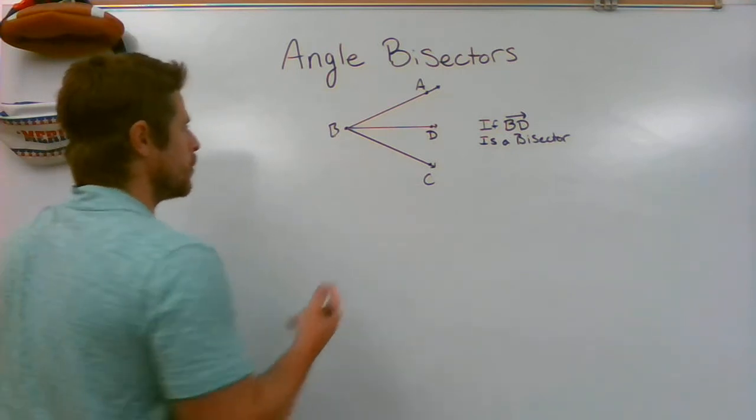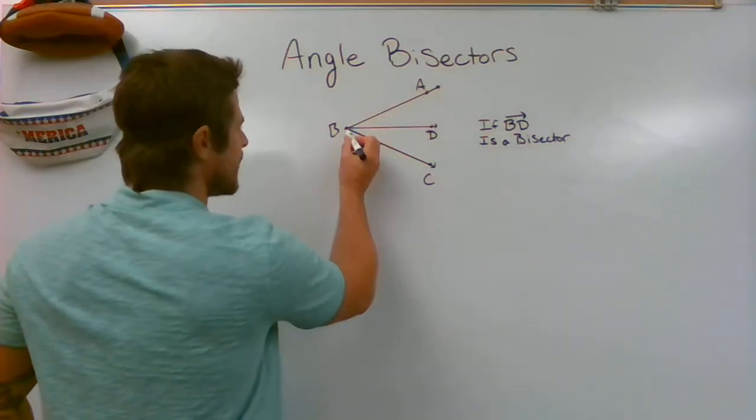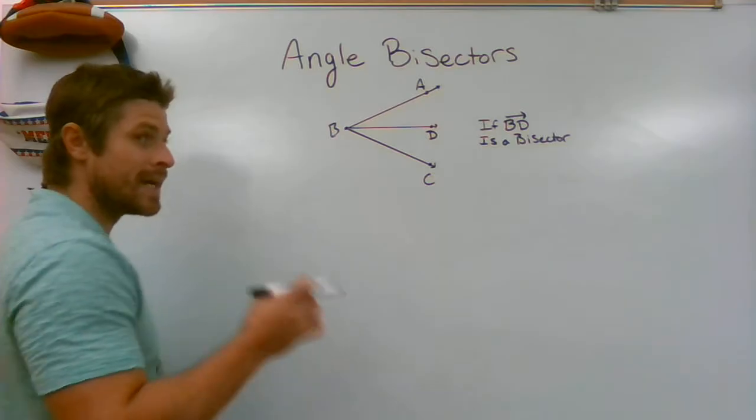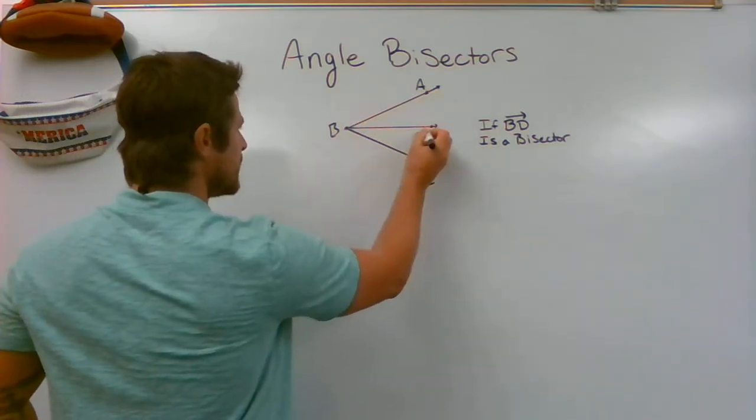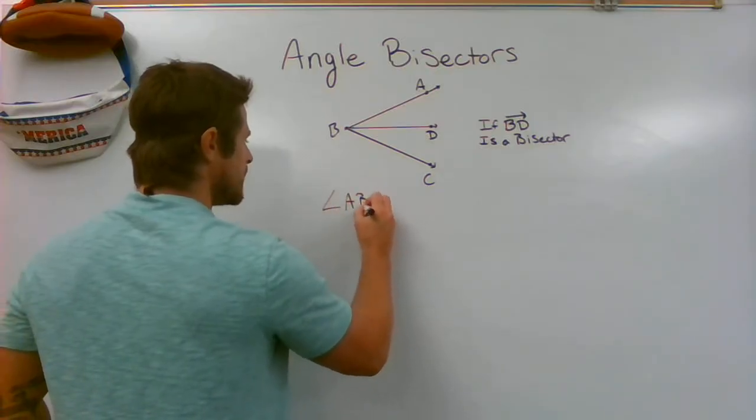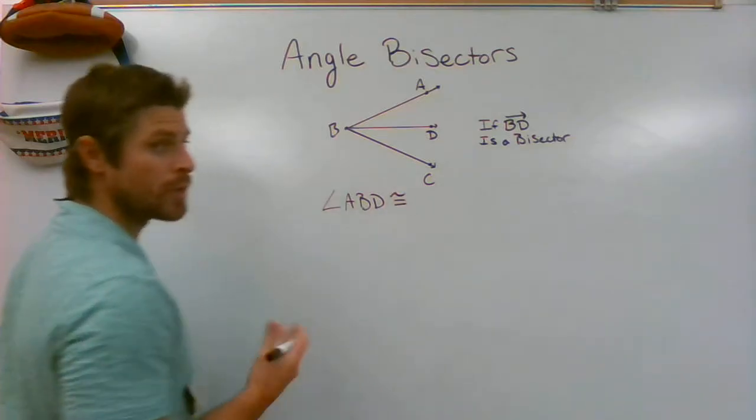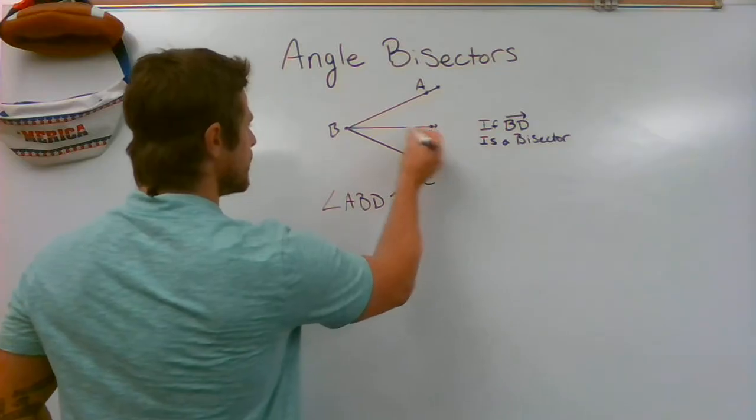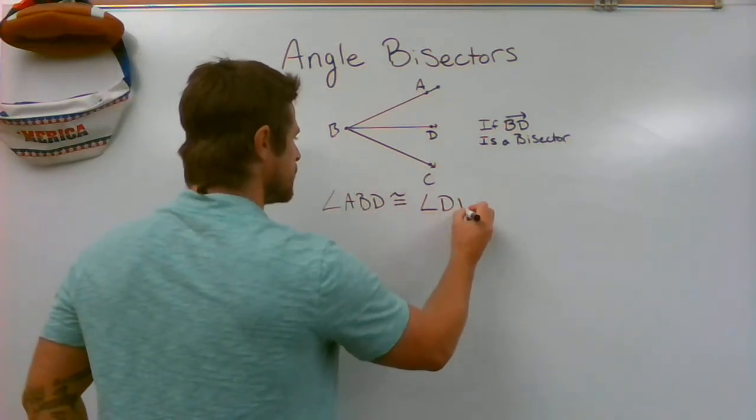So what do we know? We now know if this big angle was cut in half by ray BD because it's a bisector, we know that angle ABD would have to be the same or congruent to DBC, angle DBC.